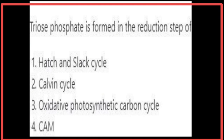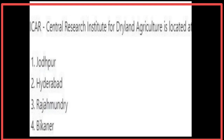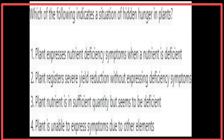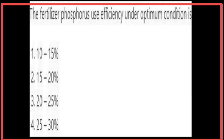Triose phosphate is formed in the reduction step of the Calvin cycle. ICAR Central Research Institute for Dryland Agriculture is located at Hyderabad. Hidden hunger in plants is indicated when plants register severe yield reduction without expressing deficiency symptoms. The fertilizer phosphorus use efficiency under optimum conditions is 15 to 20 percent.